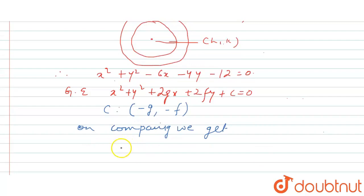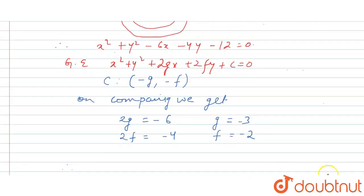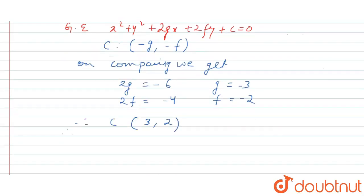On comparing, we get 2g = -6, which gives g = -3, and 2f = -4, which gives f = -2. So the center of the given circle is (-g, -f) = (3, 2).